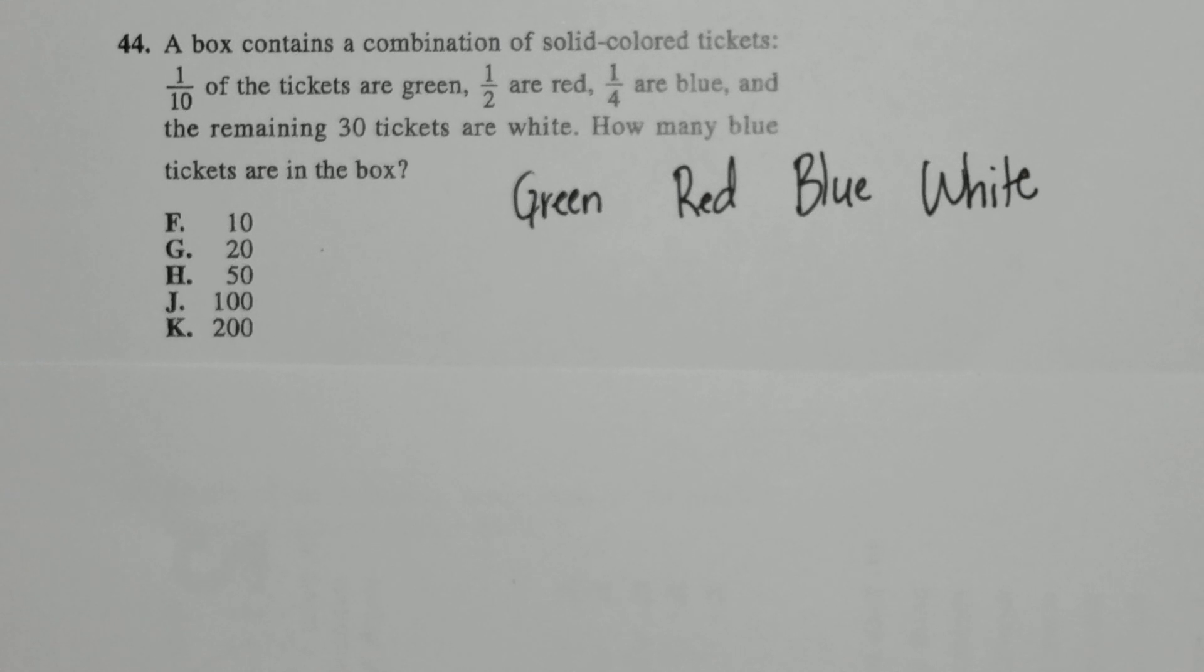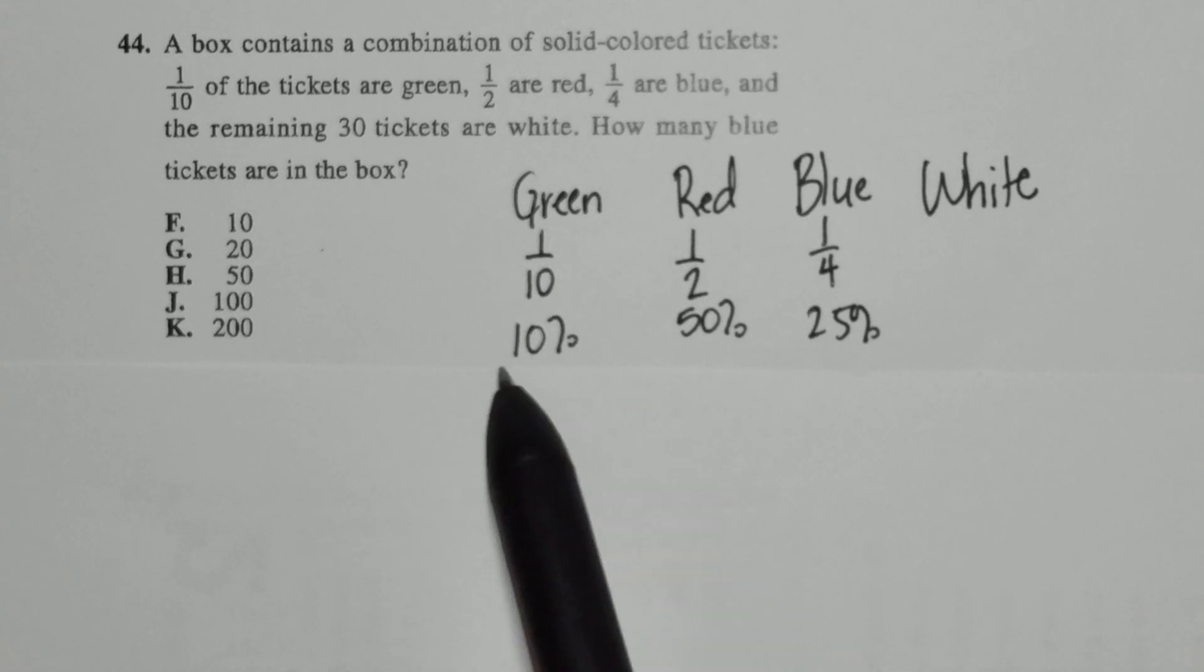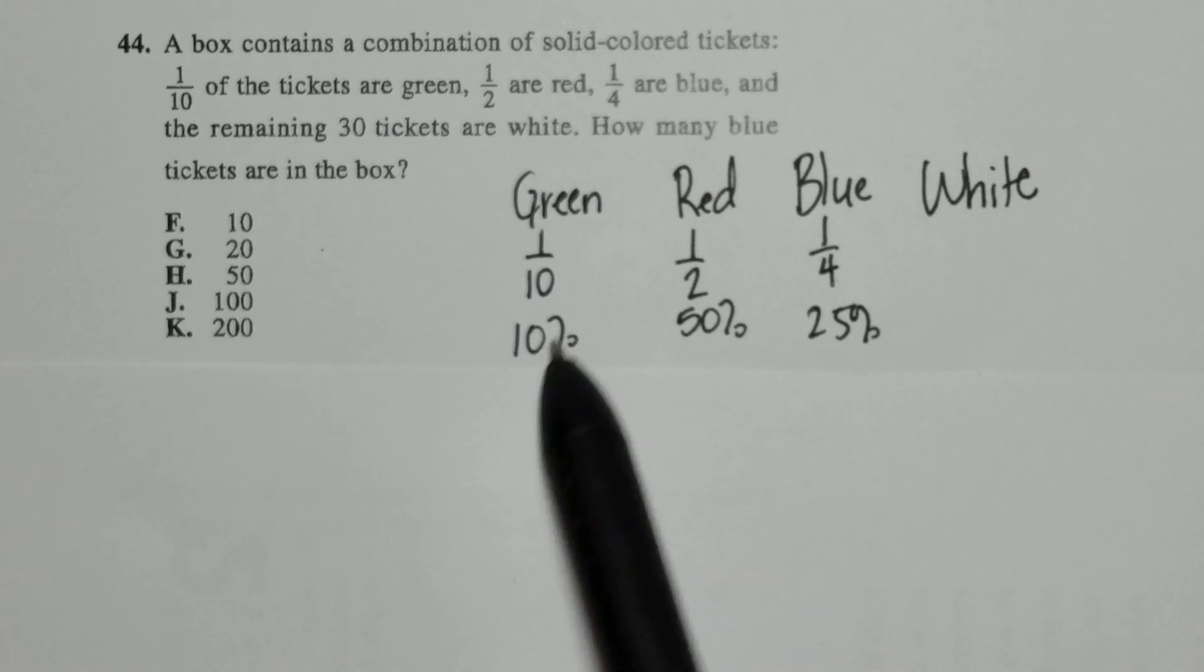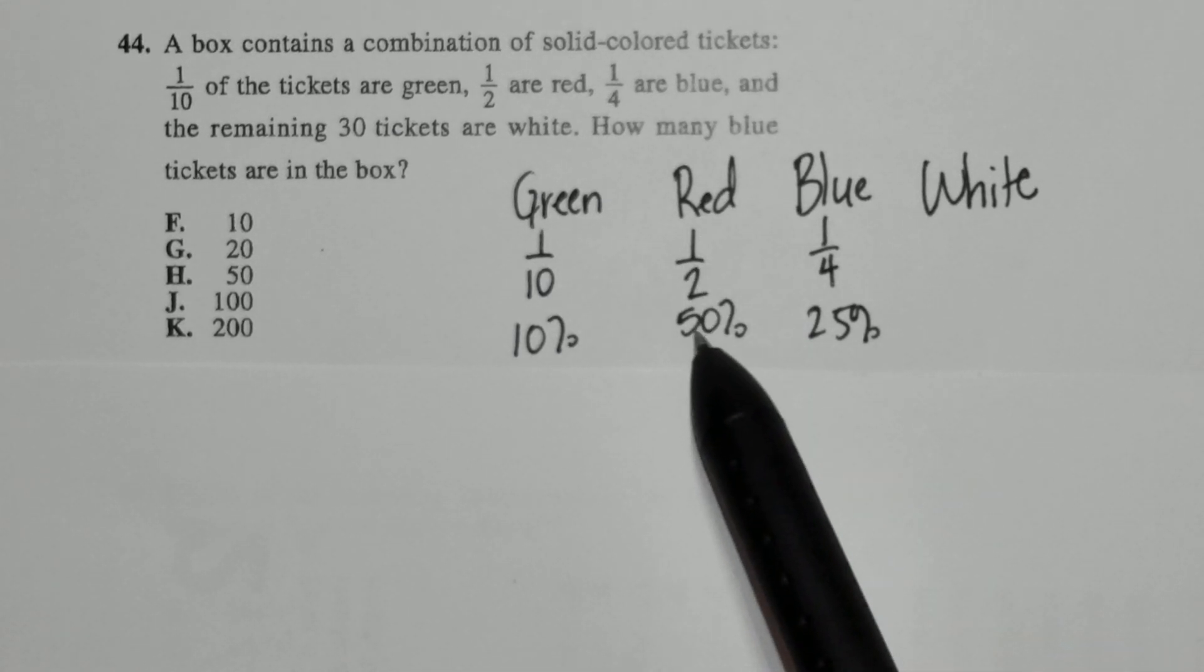Now I'm going to write down what we know from the problem. I know 1 tenth are green. 1 tenth, written as a percentage, is 10%. I know 1 half are red.